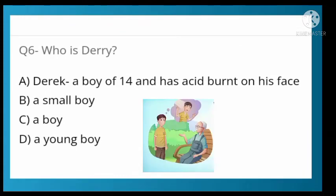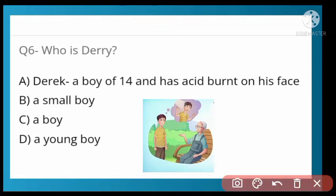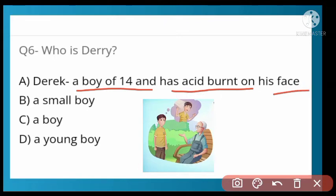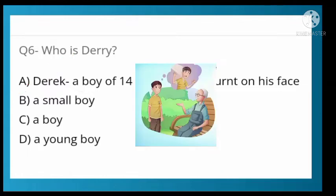Who is Derry? A boy of 14 who has an acid burn on his face — a 14-year-old boy whose face was burnt by acid. Option A is correct. Because of his burnt face he hides himself and cannot socialise, as he feels people will mock him. So option A is correct.